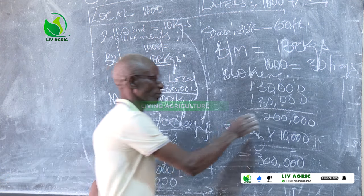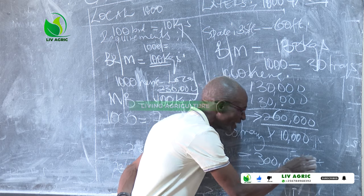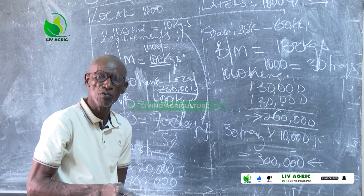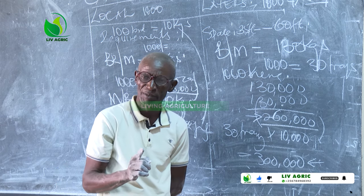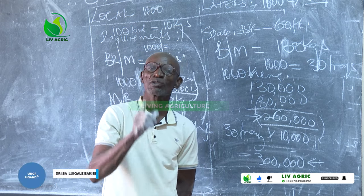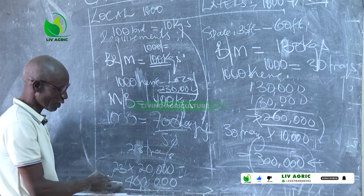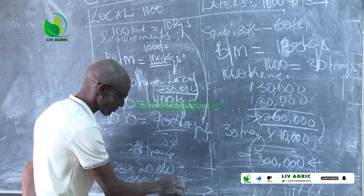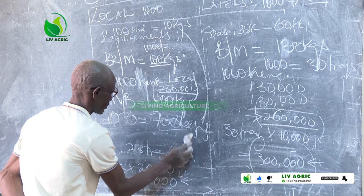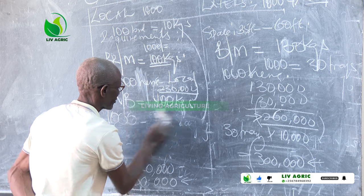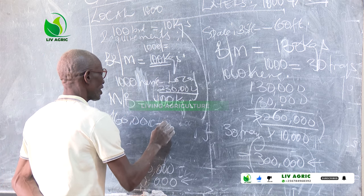Now if this is the input and you earn this — I'm calculating this excluding medicine, excluding labor, excluding water. This is where you stand. And if it comes to the local: 460 minus 320.